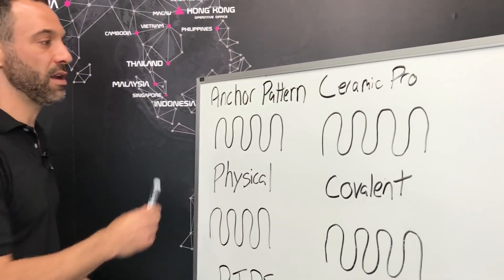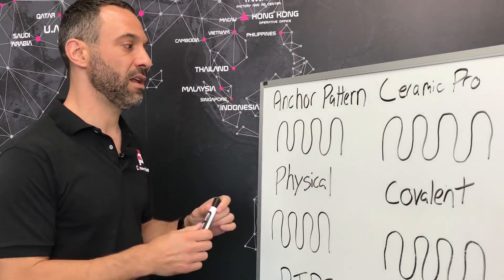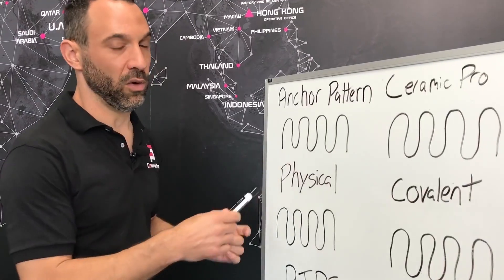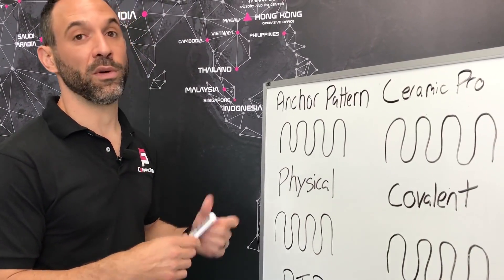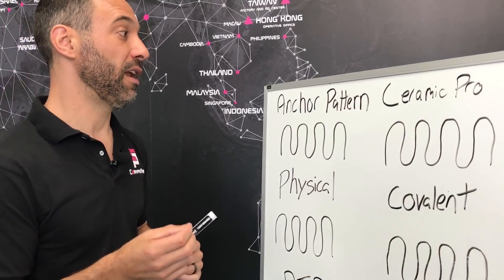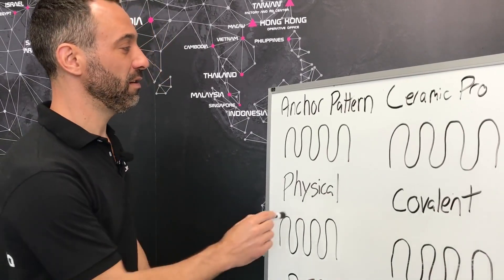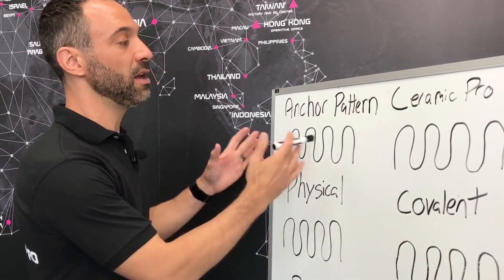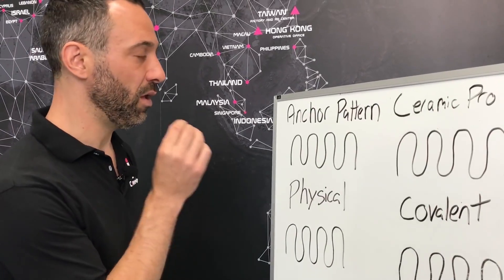So what we've got here is called the anchor pattern, and I get asked a lot, is this orange peel or texture? It's not. It's much, much, much smaller than that because when we're talking about Ceramic Pro, we're talking about nanotechnology. Nanotechnology is basically very, very, very small. So anchor pattern is basically the open pores of your very small atomic level particles.